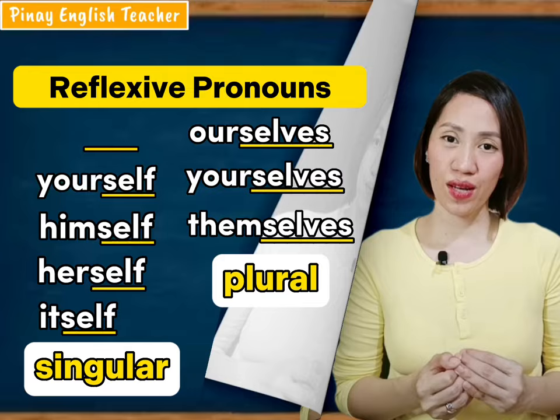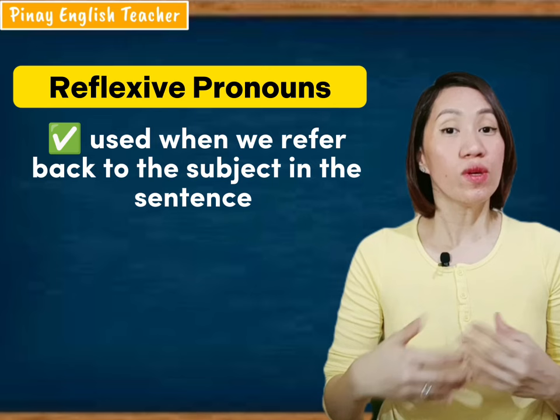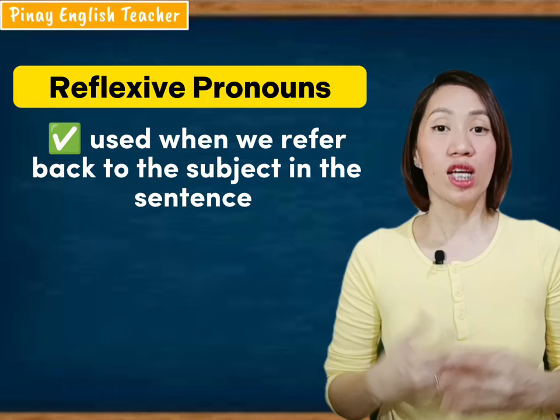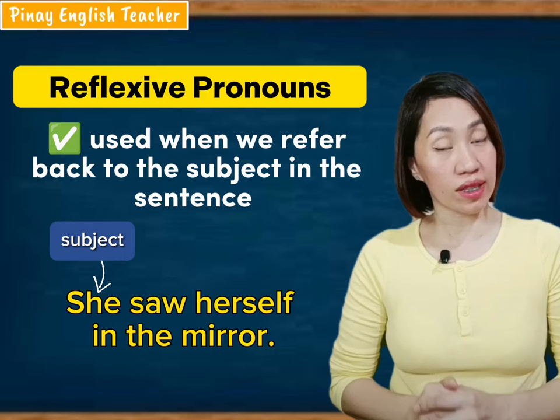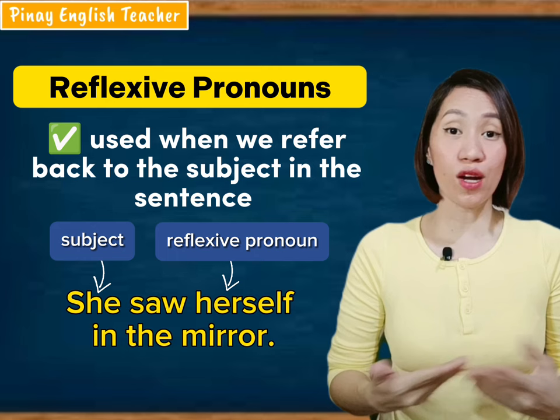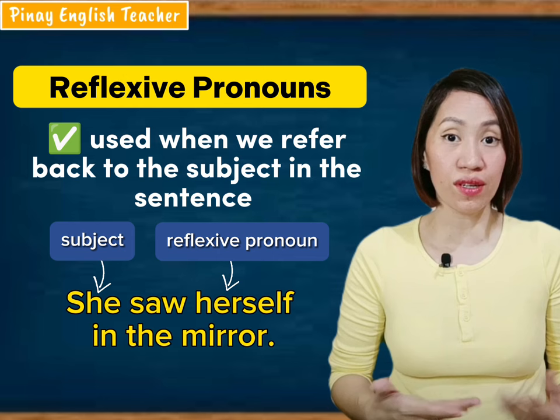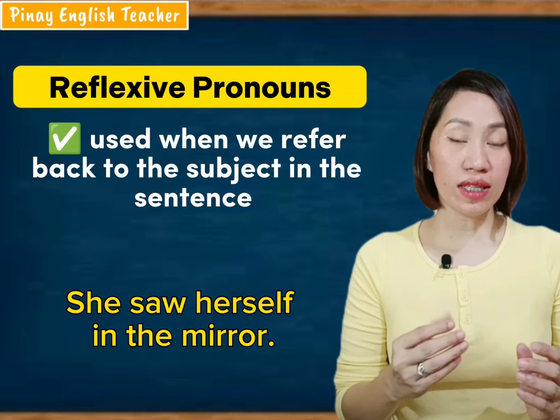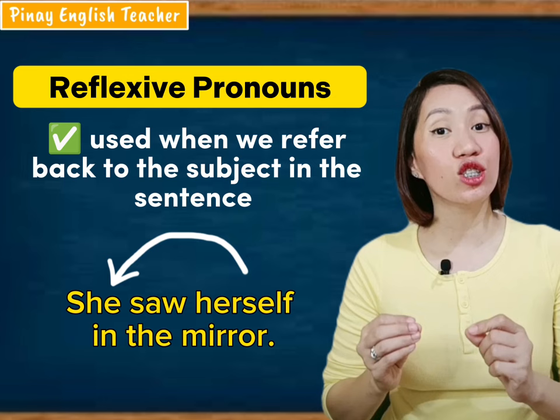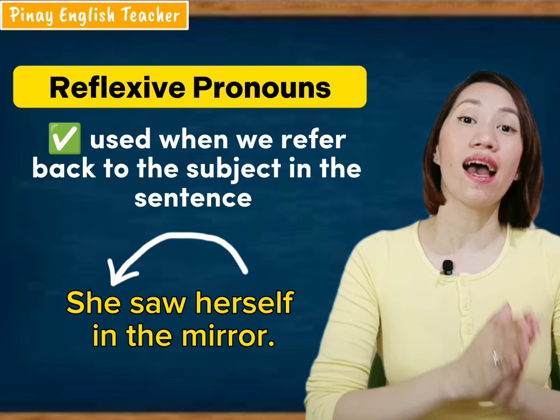Reflexive pronouns are used when we refer back to the subject in the sentence. For example, 'She saw herself in the mirror.' The subject in that sentence is 'she' and the reflexive pronoun is 'herself.' Who did she see in the mirror? Herself — not her mom, not her dad, not her brother or sister, but herself. The reflexive pronoun 'herself' is pointing back to the subject, which is 'she.' The meaning of 'herself' in that sentence is 'she,' meaning one person is involved.